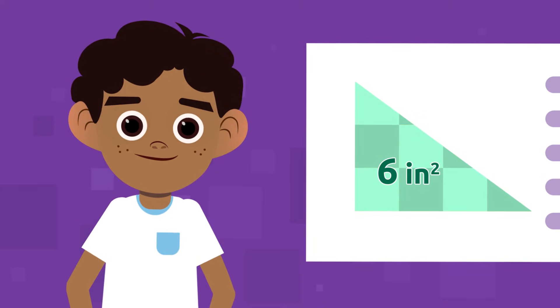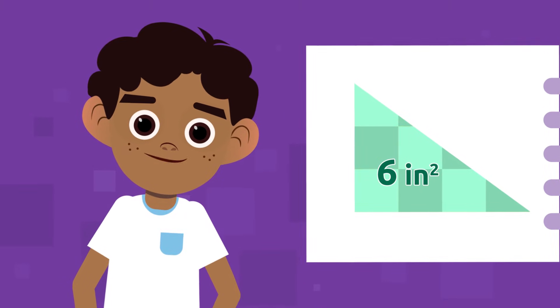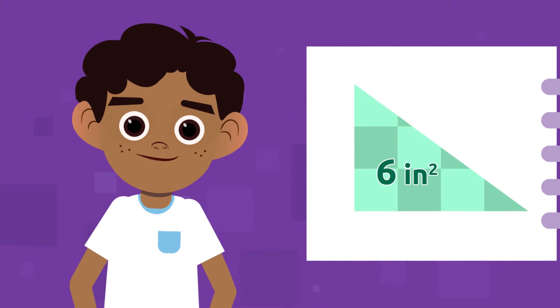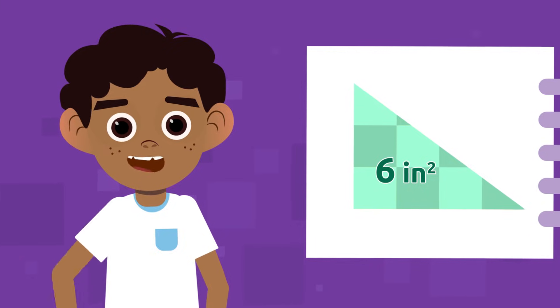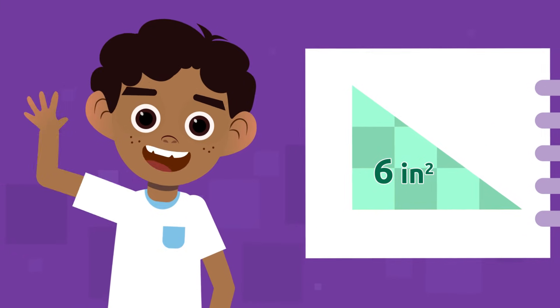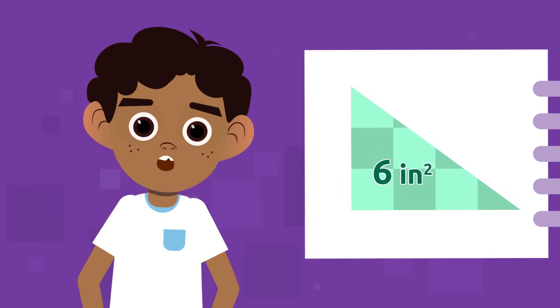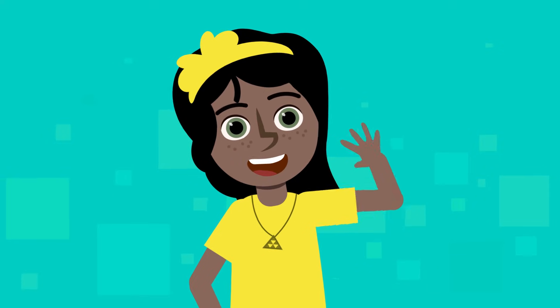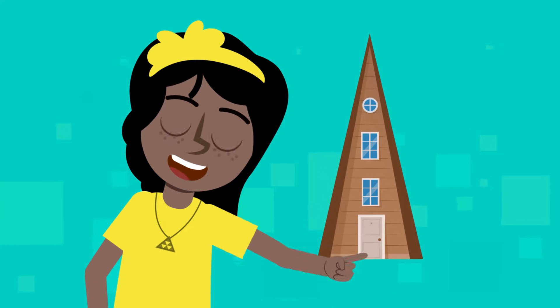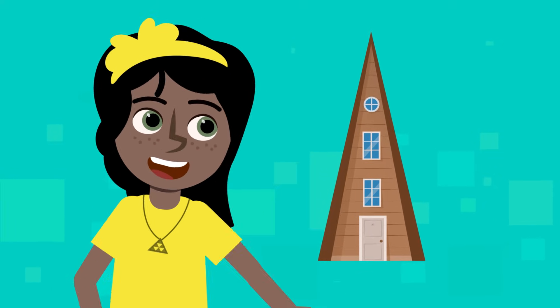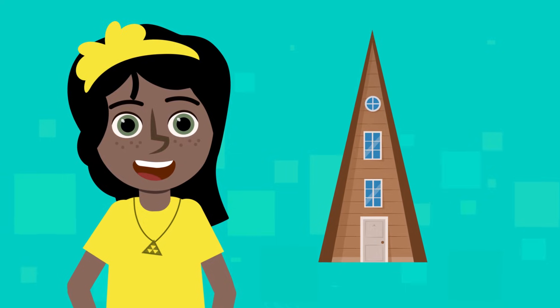This triangle contains six one square inch squares. Knowing the area of the triangle is very important. Let's look at another example. Anna wants to paint the front of her triangular house. She wants to know the area of the wall to find out how much paint she has to buy.